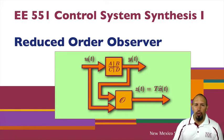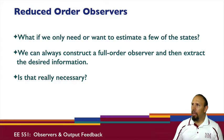We're talking about reduced order observers now. What if we only need or only want to estimate some of the states? We can always construct a full-order observer and then just extract the desired information, but is that really necessary?